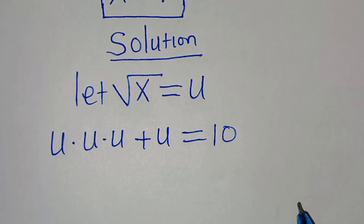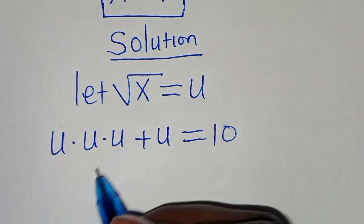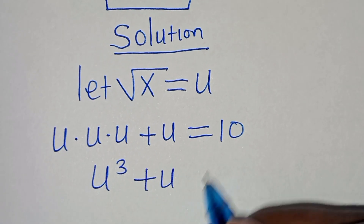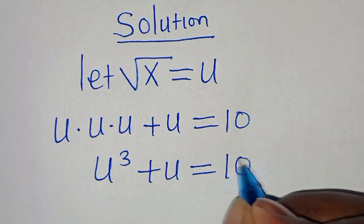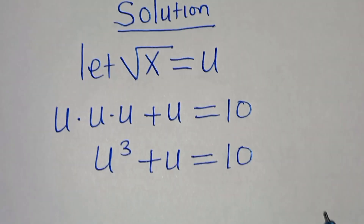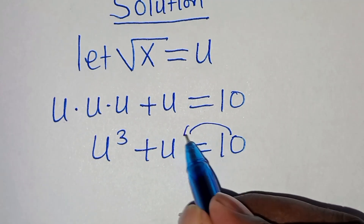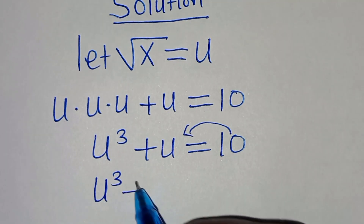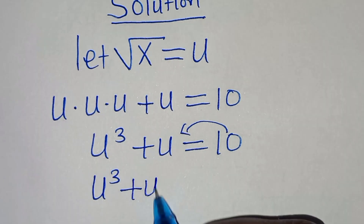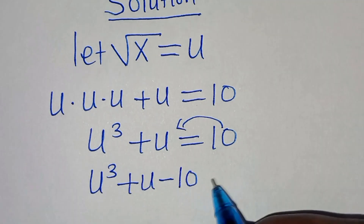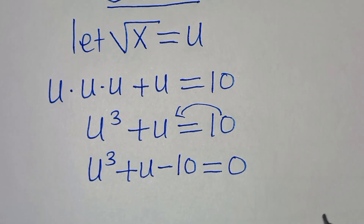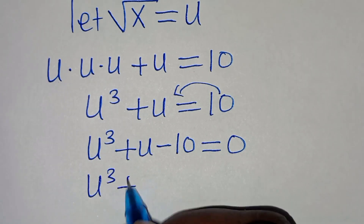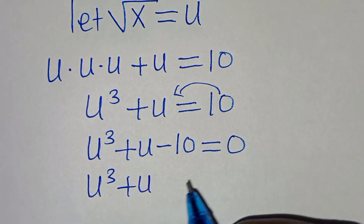So u times u times u is u to the power of 3, plus u, equals 10. Taking 10 to the left-hand side, we have u to the power of 3 plus u minus 10, which equals 0.